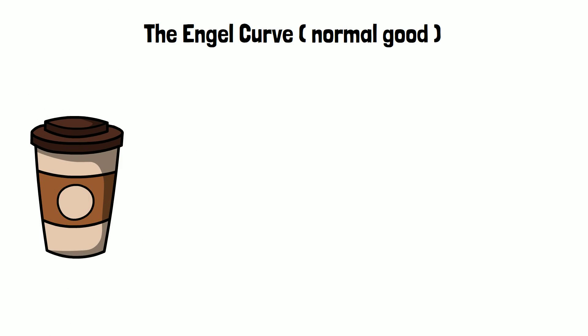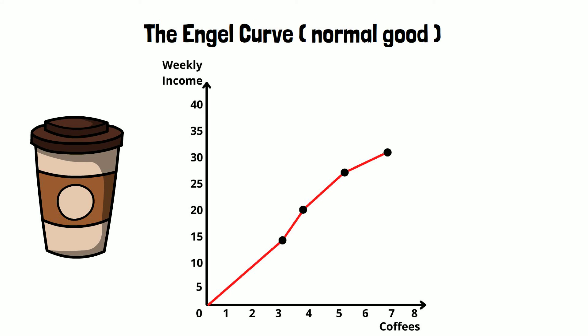The Engel curve is different for your consumption of coffee. You can see in the graph on your screen that your consumption of coffee keeps increasing when your income increases. This means that coffee is a normal good. You buy more coffee when your income increases.